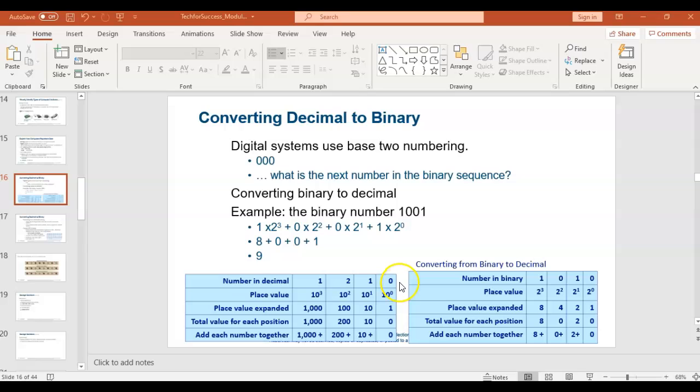It works in a similar way for binary. So now when we convert a number from binary to decimal, let's say I give you a four-bit number, 1010, and I ask you to tell me what its value is in decimal. Give each position a place value. They are, instead of a power of ten, a power of two because we're using the binary system.